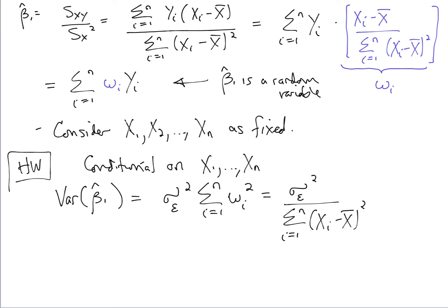This variance can also be written as sigma_epsilon squared divided by the sum from i=1 to n of (x_i minus x-bar) squared, or equivalently sigma_epsilon squared divided by (n minus 1) times s_x squared. This gives us a way to think about the precision of the linear regression slope estimate by examining its variance, left as a homework exercise to derive.